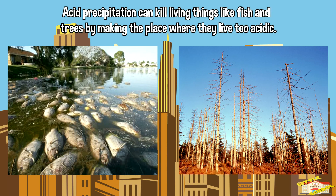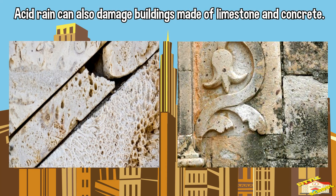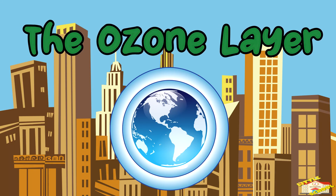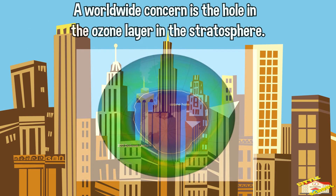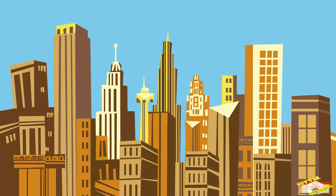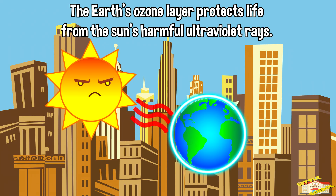Acid precipitation can kill living things like fish and trees by making the place where they live too acidic. Acid rain can also damage buildings made of limestone and concrete. Let's talk about the ozone layer. A worldwide concern is the hole in the ozone layer in the stratosphere. The earth's ozone layer protects life from the sun's harmful ultraviolet rays.